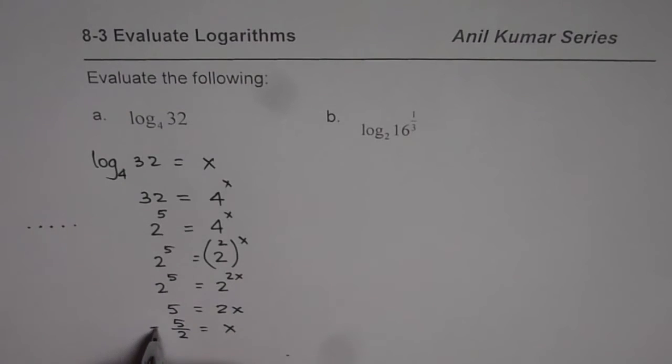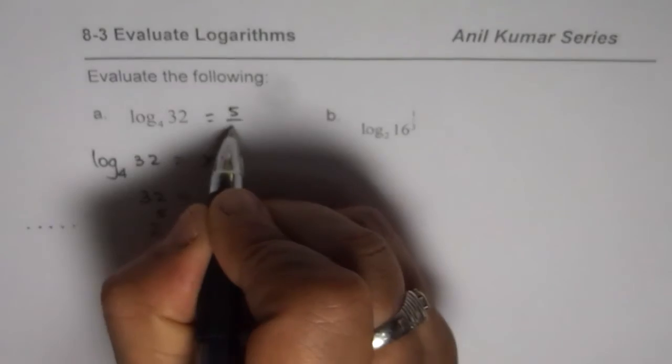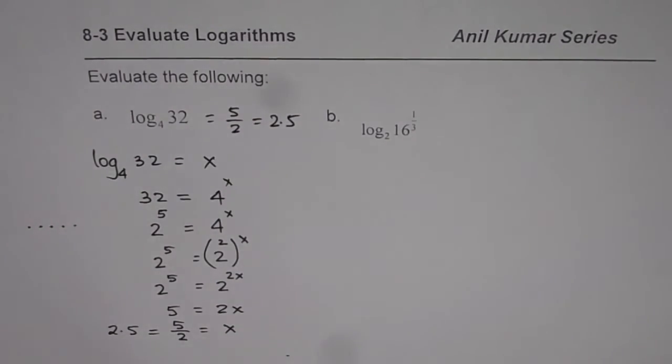So that becomes our answer or you can write in decimals 2.5. So the first answer could be 5 over 2 or 2.5. So these are the steps to follow.